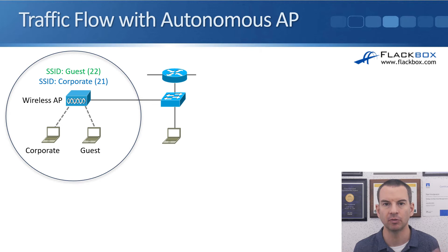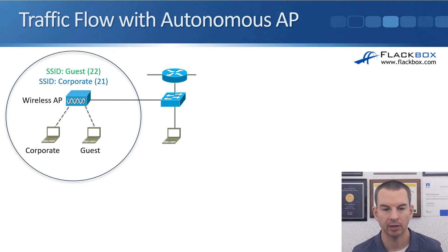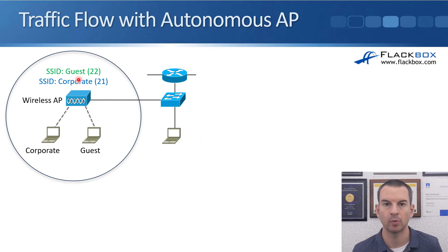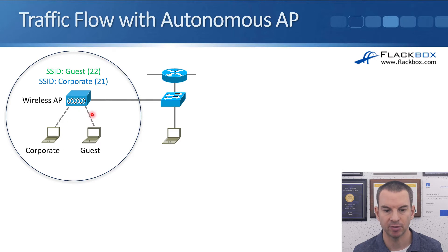Before I show you the configuration, there is a difference depending on whether it is an autonomous or a lightweight AP. So let's review the traffic flow again so you can understand why we have that difference. I'll start off with the autonomous AP. In our example, I've got a couple of wireless LANs — the guest WLAN and the corporate WLAN — and a wireless AP with a couple of clients connected into the wired network.